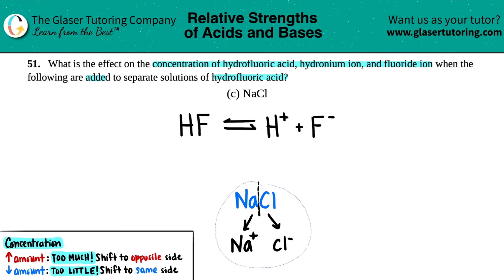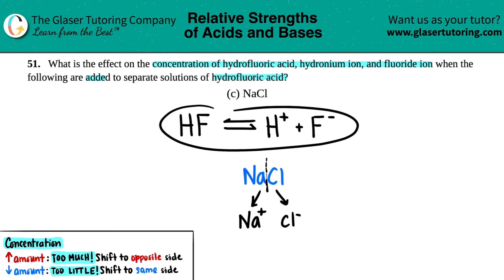Now the first thing you would do is hopefully one of these ions, Na plus or Cl minus, is in this equation, but both of them are not. So now I think to myself, okay, which one of these, if any, has acidic or basic properties? Maybe one of them is basic. Maybe one of them is acidic. And then we can figure out what's really happening.